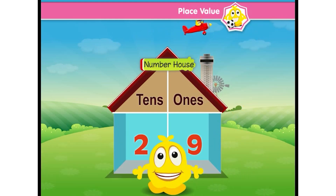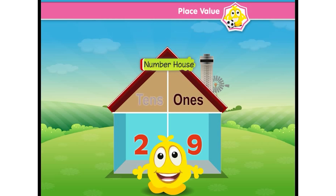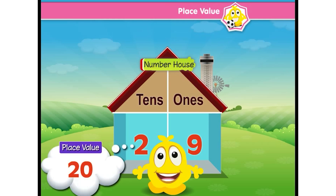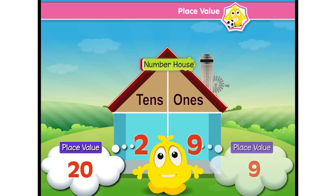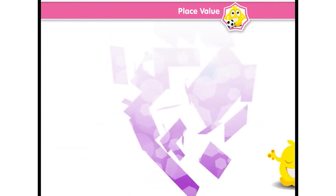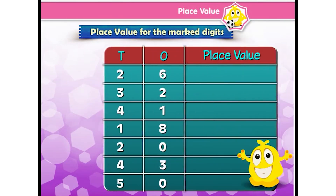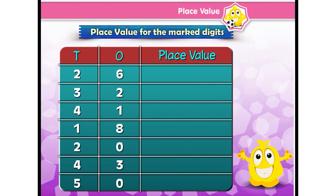I learned a trick to describe the place value. First, arrange the numbers in the number house. Then if the number is in the tens place, zero is written with it to describe the place value. And if the number is in the ones place, it is written as it is. Let's see some place values for the marked digits.